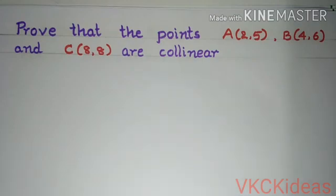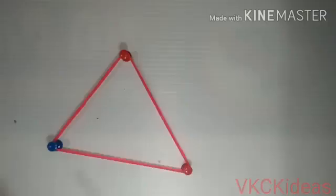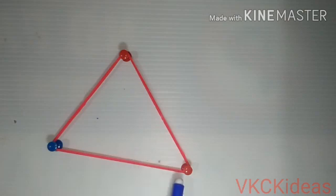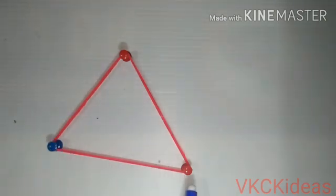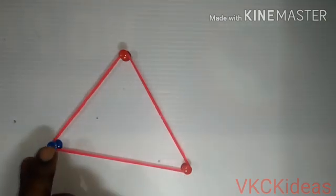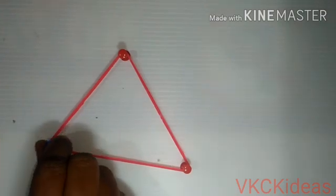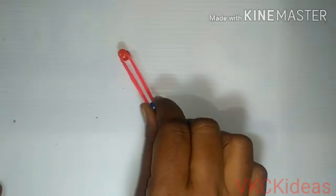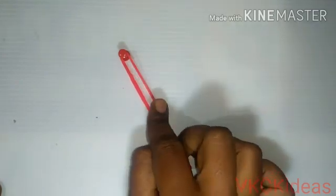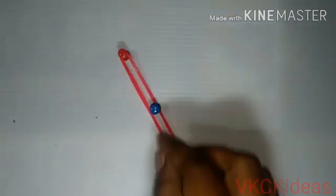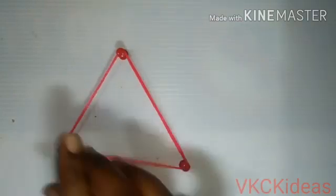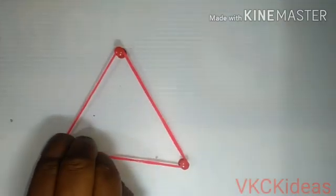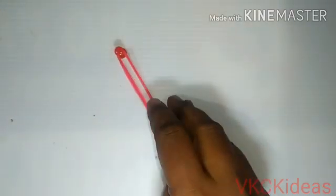Before actually solving the problem, we shall take up a small activity. Here are three points which are non-collinear. If these points are joined by line segments, they make a triangle and hence they have some area. Now, if I shift this point so that all the three points become collinear, then the area tends to 0 and becomes 0. So, whenever we take non-collinear points, it forms a triangle, and for collinear points, the area of the triangle will become 0.